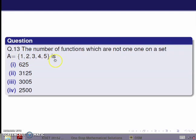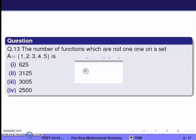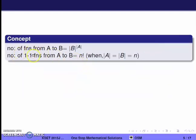Next, question on functions. The concept for the number of functions from A to B is equal to the cardinality of B raised to the power of cardinality of A. The number of one-to-one functions from A to B, when cardinality of A equals cardinality of B equals n, is n factorial.